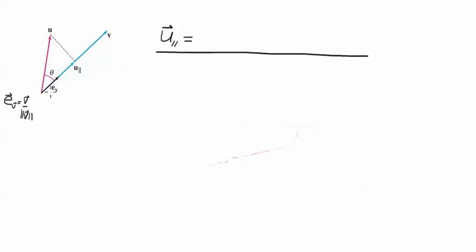It's going to involve the unit vector in the v direction, and here I'm just reminding you that the unit vector in the v direction is v divided by its magnitude. What we want to do by the end of this video is determine the formula for u parallel.